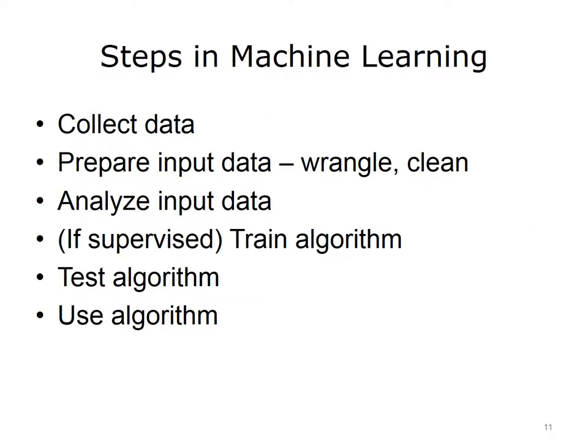The steps in using machine learning begin by collecting the data we want to use for machine learning purposes. We then have to prepare the input data in a way that can be used by machine learning algorithms. This is sometimes called data wrangling, where we transform the data into formats suitable for machine learning. We may also need to clean the data, since the source may contain other types of data we want to exclude. Next, we analyze the input data. If we're using supervised methods, we then train the algorithm, and subsequently test it with test data different from the training data to determine if the algorithm is generalizable and not overfitted. Finally, we make use of the algorithm for the task for which we planned to use it.